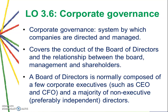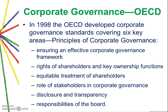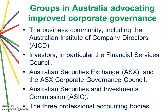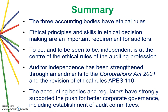Corporate governance is a large learning objective but is less important for our auditing course — it's mainly for your information. Corporate governance is the system by which companies are directed and managed. It covers the conduct of the board of directors and the relationship between the board, management, and shareholders. A board of directors includes the CEO, CFO, other corporate executives, and non-executive directors. A director will not be considered independent if they are a substantial shareholder or associated with one.